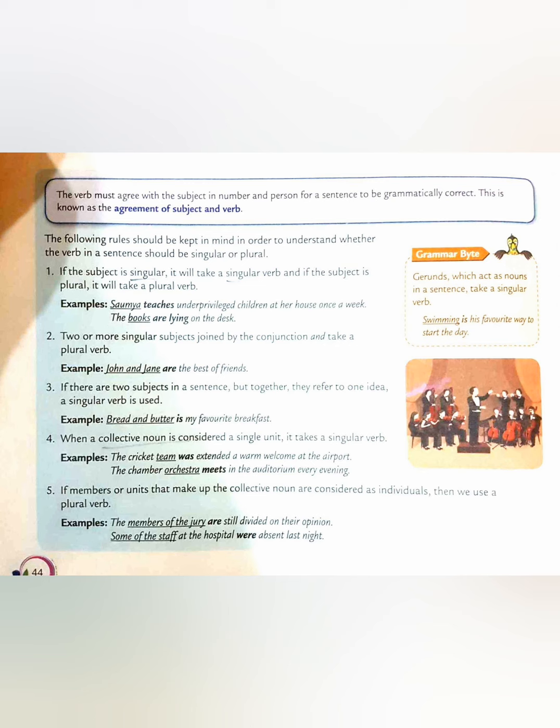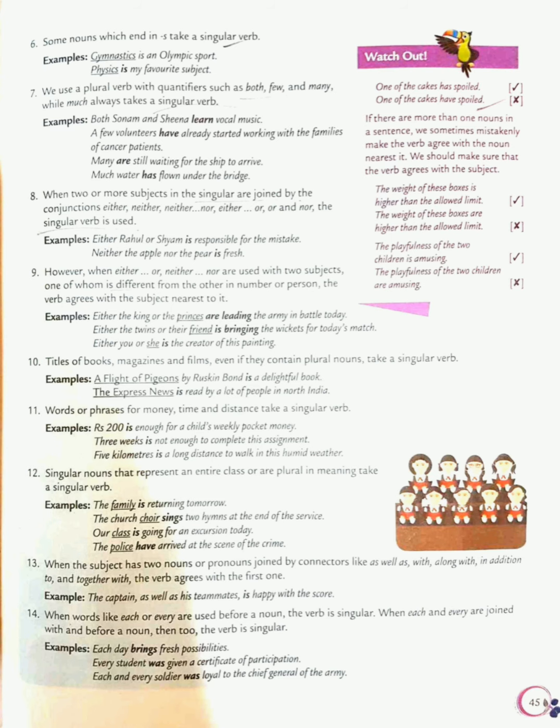Next we have the sixth point. Some nouns which end in S take a singular verb. You have seen that news consists of S at the end and you will be using it as a singular subject, and if it is a singular subject, it will always take a singular verb. For example, gymnastics is an Olympic sport. Here gymnastics is a singular subject, so we will be using singular verb.